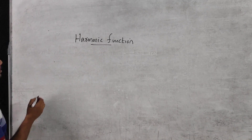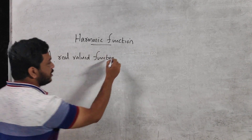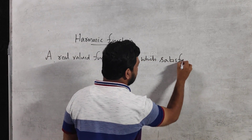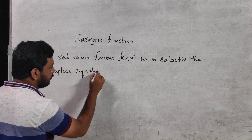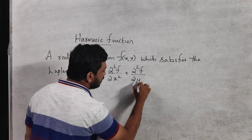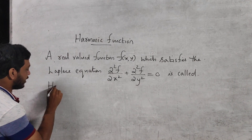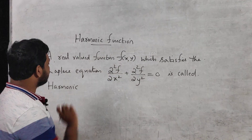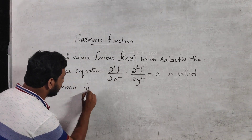Let us start with the definition. A real valued function f(x,y) with continuous first and second order partial derivatives which satisfies the Laplace equation — ∂²f/∂x² + ∂²f/∂y² = 0 — is called a harmonic function.